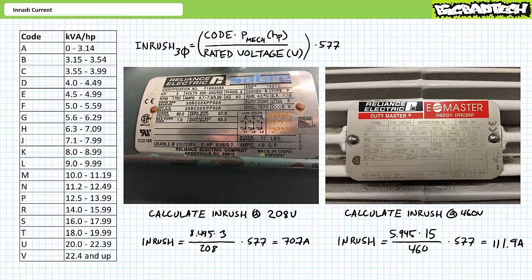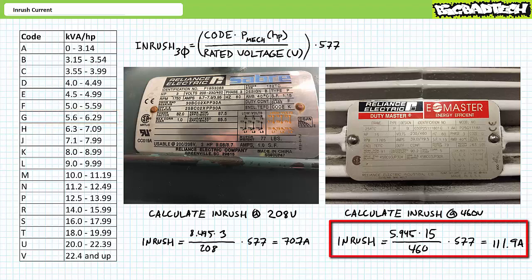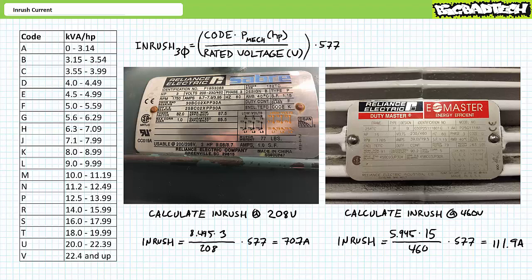The second example features a 15 horsepower motor intended to operate using 460 volt three-phase AC in the high voltage configuration with a locked rotor code of G, meaning it has a kilovolt ampere per horsepower constant with a low of 5.6 up to a high of around 6.3. Center of mass would be the average of these two numbers at around 5.95. Substituting this value, the power rating in units of horsepower, and the rated voltage into the equation results in an estimate of roughly 112 amps — only roughly 5.7 times the rated current of 19.5 amps when operated in the high voltage configuration.